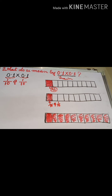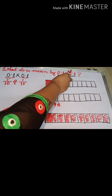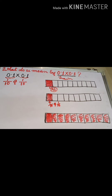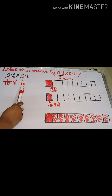To understand how to multiply decimals, let us take a very simple example: 0.1 × 0.1. The meaning is pretty simple — 0.1 is nothing but 1/10, so 0.1 × 0.1 means 1/10 of 1/10.